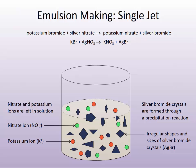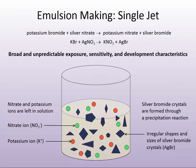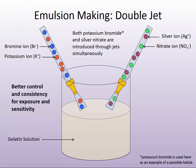Whenever a single jet experiment is used to form emulsions, we get a whole range of dislocations and defects, random sizes and shapes and habits, and a wide distribution of grain sizes. All of this will mean a fairly broad and unpredictable exposure, sensitivity, and development characteristic for those early materials. To get better control and better consistency on exposure and sensitivity, this is why all of the chemical manufacturers for silver halide emulsions went to a double jet.